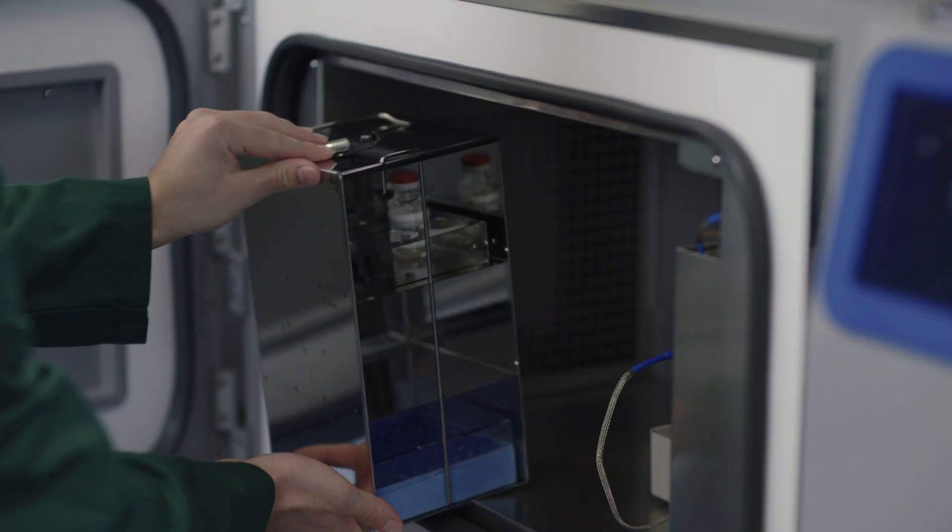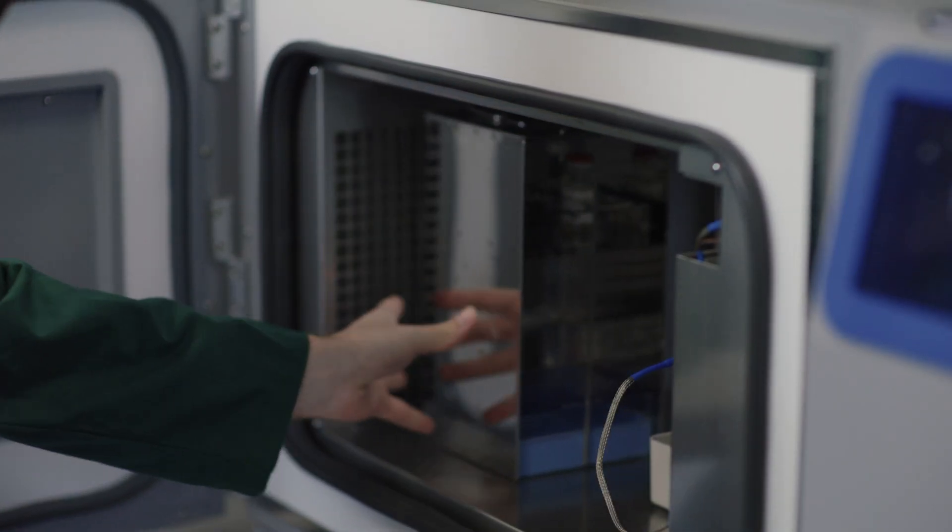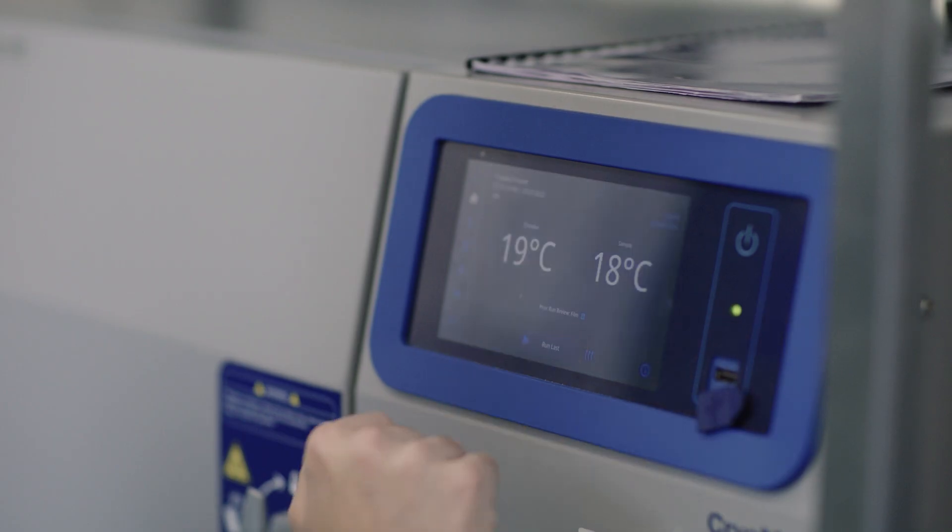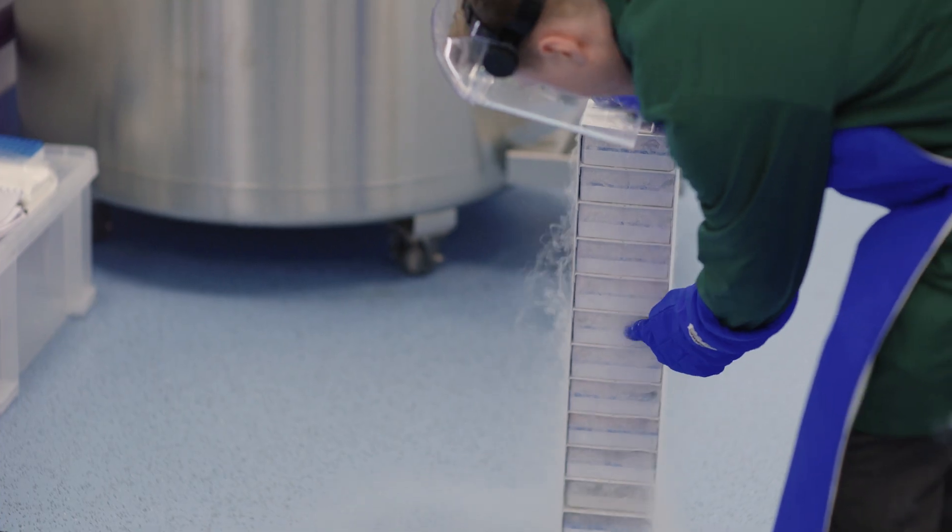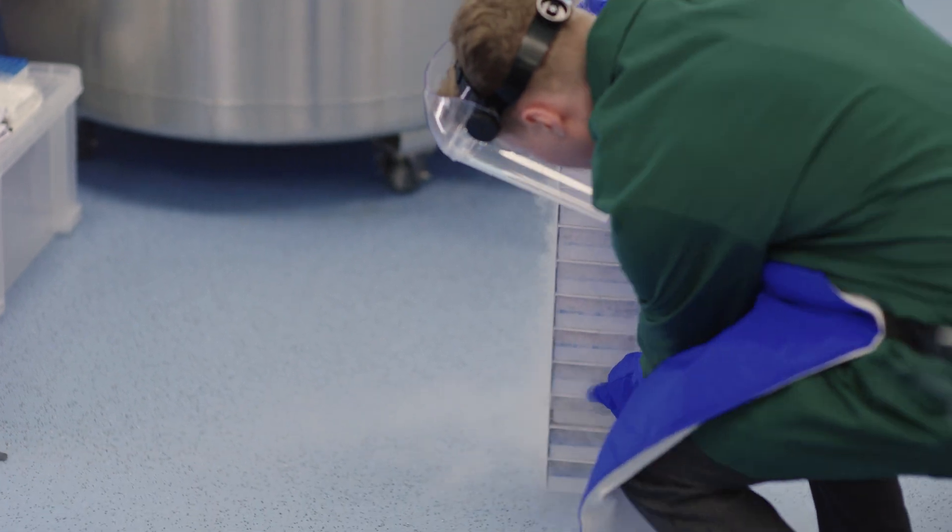The cell vials undergo a slow and precise freezing process in order to safely store them. An automated program slowly cools them to very cold temperatures before they are stored in liquid nitrogen.